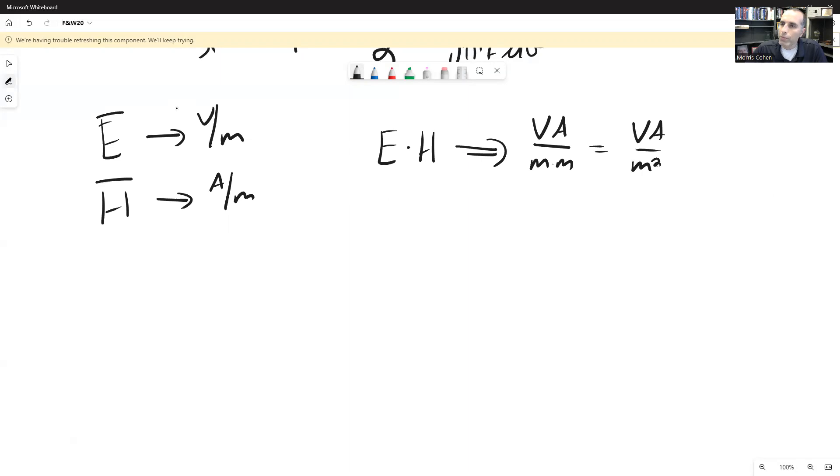Now we actually know what volt times amp is. That's equal V times I, right? And we know that P equals VI. If you take a voltage and you multiply it by a current, you get a power. So let's write this actually as watts per meter squared.